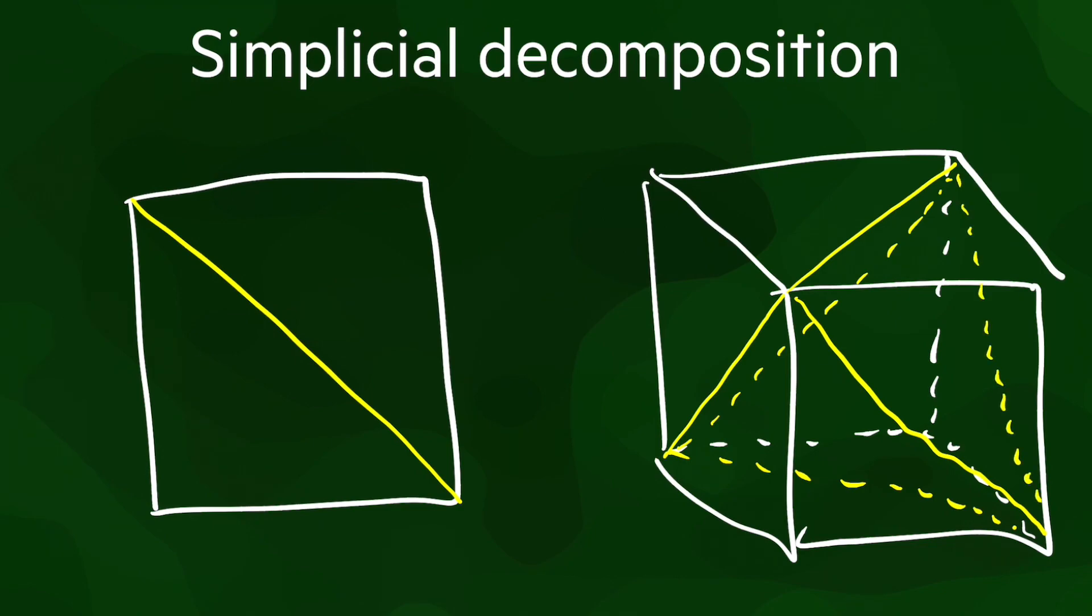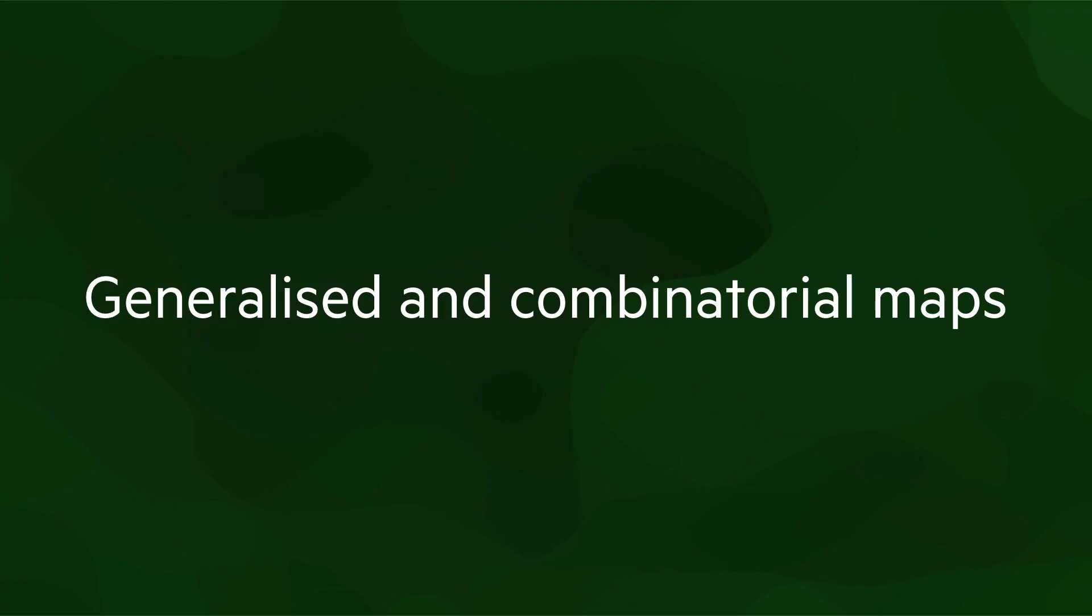Such a triangulation can be done geometrically, like with a constrained or conforming triangulation, but it can also be done as a combinatorial operation without any geometric tests. Generalized and combinatorial maps do exactly this.